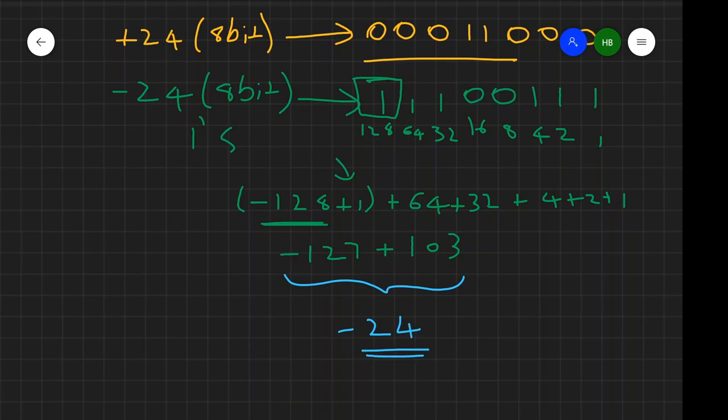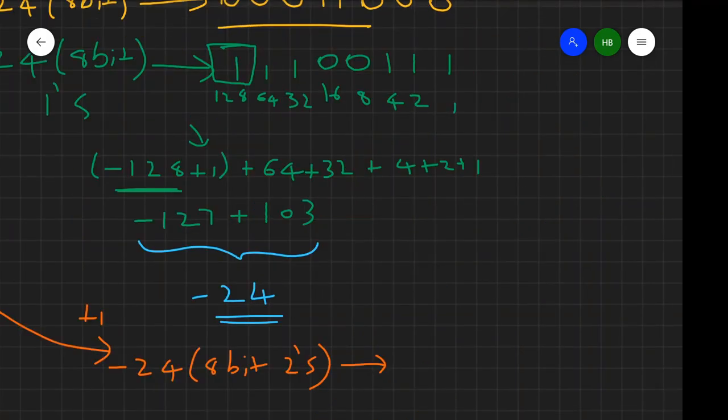Now let's assume we want to express this in 2's complement. We have 1's complement already. We just add 1 to that number. Negative 24 in 8 bit and 2's complement. This will become 11100111 plus 1.